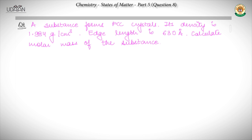Question number 8 is a numerical based problem. A substance forms FCC crystals. Its density is given to be 1.984 gram per centimeter cube. The edge length is also given as 630 angstrom. We need to calculate the molar mass of the substance, so let's move to the solution part.